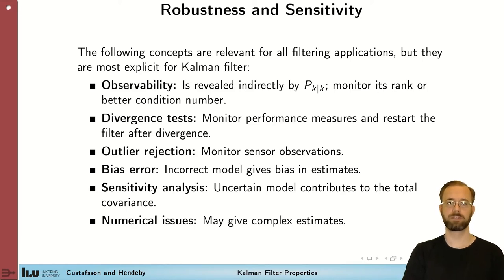Observability, which tells us if it's actually possible to derive information about the state that we're looking for. Divergence tests, so indicate as early as possible that the filter is not working as expected. Outlier rejection, monitor the observations that we get so that we don't include obviously wrong observations.